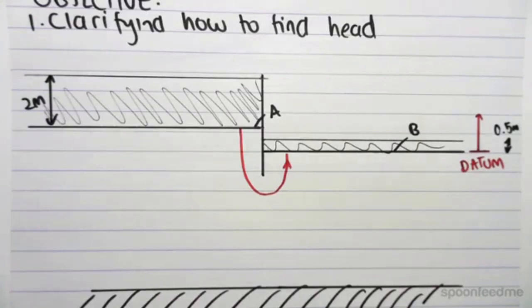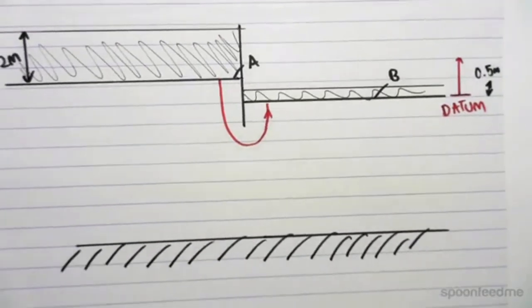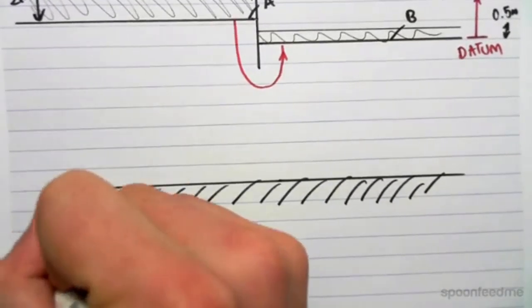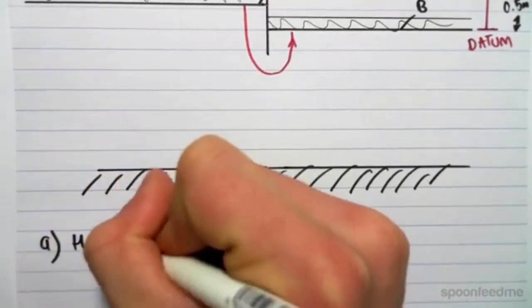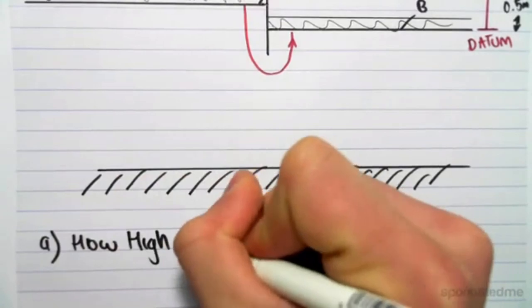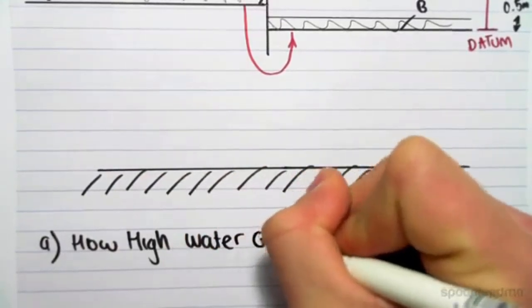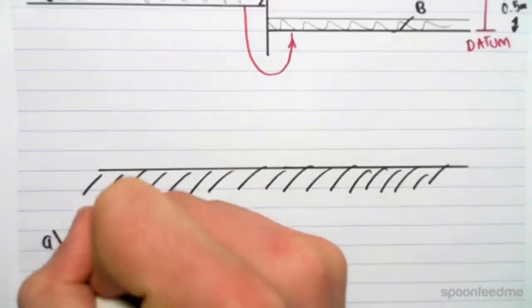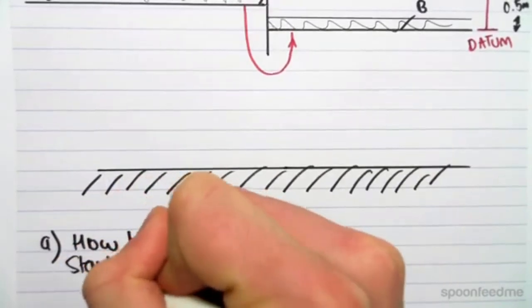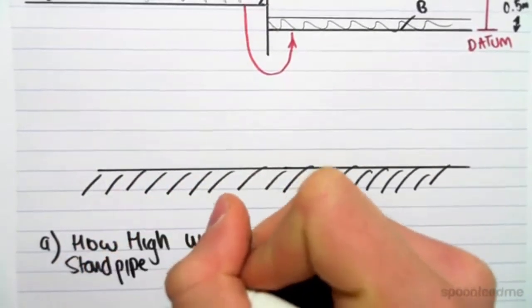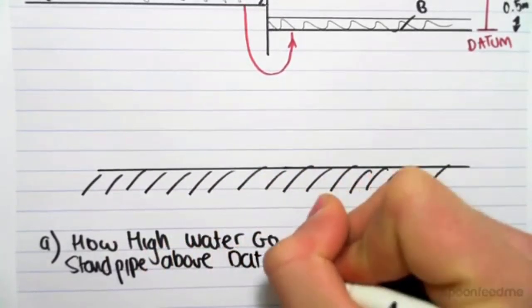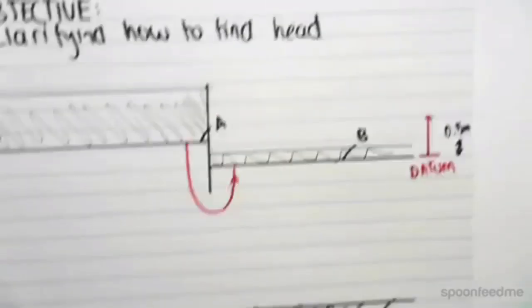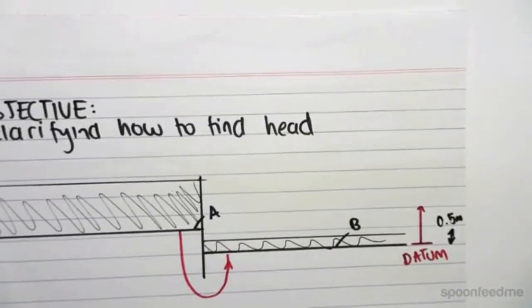Now head, we can think of in two ways. We're going to define it in two ways. The first way is we need to ask how high does water go if we were to stick a standpipe? If we were to stick a standpipe, how high would the water go above the datum? It needs to be above the datum. So using this method, let's go find the head.